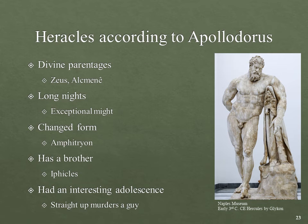We also have another source — I gave you some Apollodorus as well this week. What does Apollodorus have to say about Heracles? Well, broadly similar — divine parentage, Zeus and Alcmene, long nights. The exceptional might is still there, but there's no mention that Zeus did this just for baby-making; for Apollodorus this is just one of Zeus's many conquests. Zeus did change into Amphitryon — same kind of thing. However, Alcmene was pregnant with a son by both Zeus and Amphitryon at the same time. So in Apollodorus, Heracles has a brother: Iphicles.